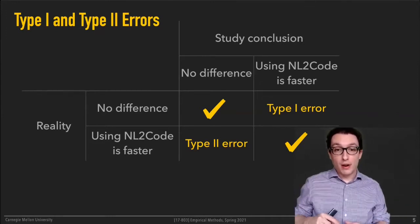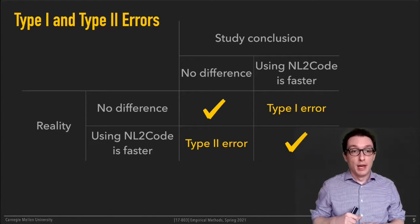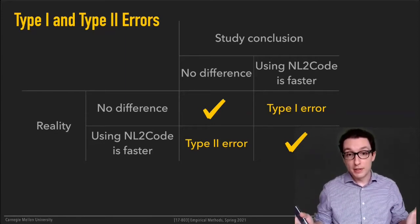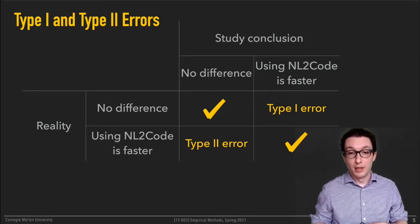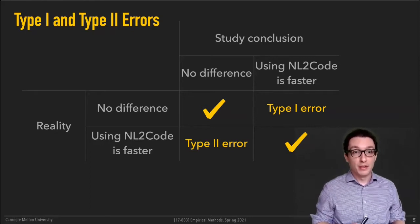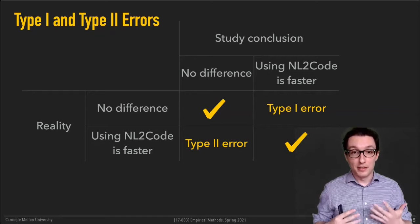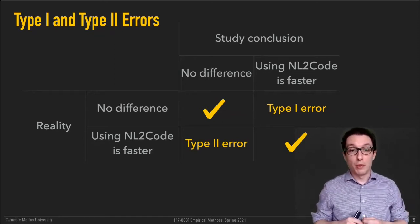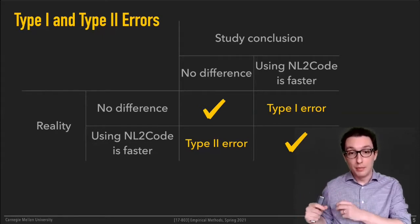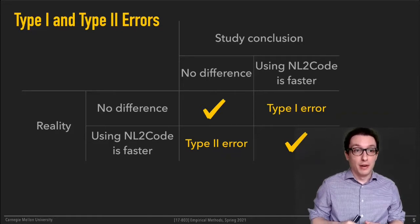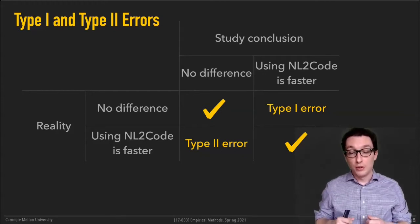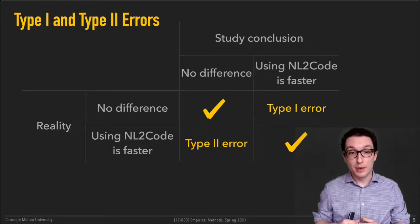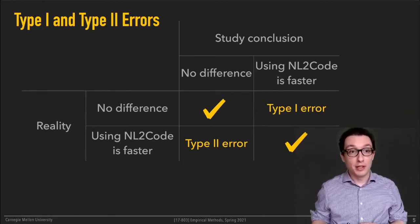The errors are the other two cases. If there's no difference in reality but you somehow detect one using your study — that's called a type one error, a false positive. There's not meant to be any difference there in reality, but because you've misconfigured your study or what have you, you're detecting some difference between the two groups of participants when there shouldn't have been one. This is called a type one error.